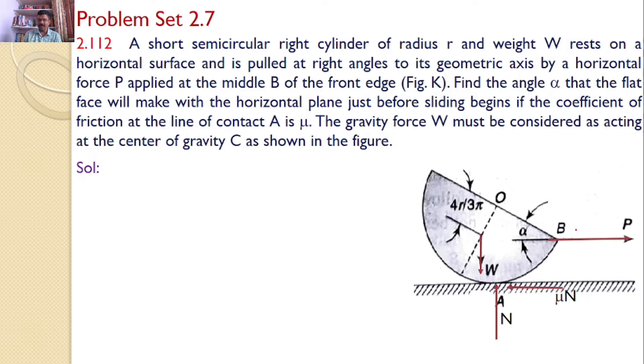So I can apply equilibrium equation ΣFx = 0. There are only 2 forces acting along x axis. P is towards right side, μN is towards left side. Hence, P = μN. That is equation number 1.